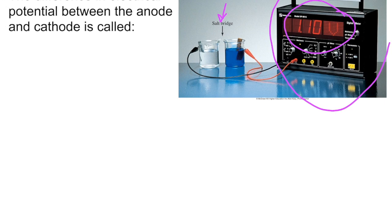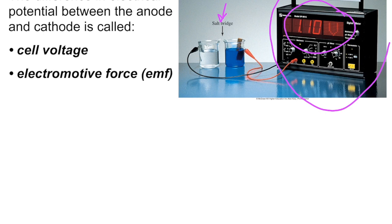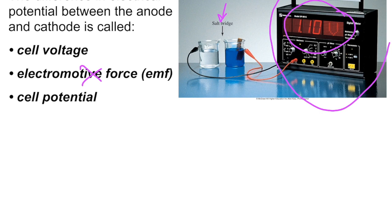What is being recorded, and what was that number? We call it cell potential — it's the difference in electrical potential between the anode and the cathode. It has several names: cell voltage, cell potential are the two common ones I use. It's also called electromotive force, or EMF, which is used more in a physics class.